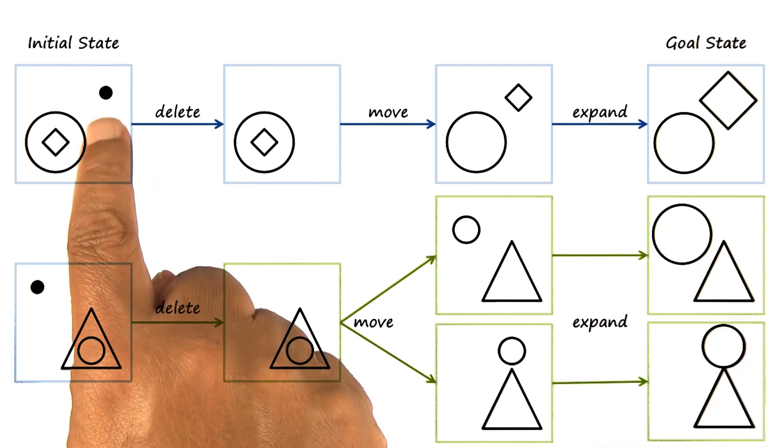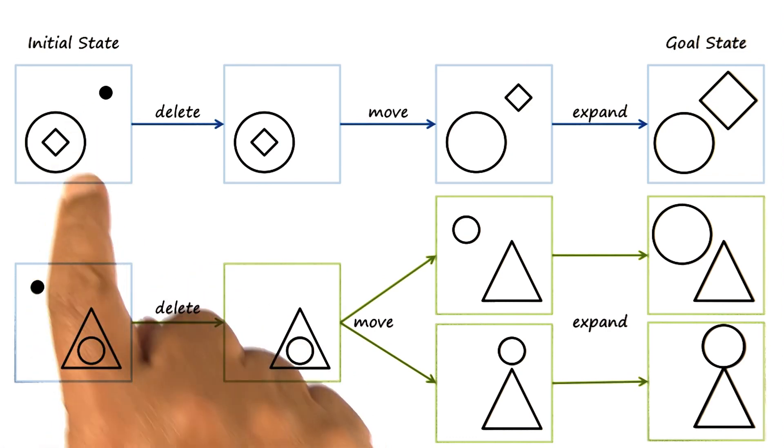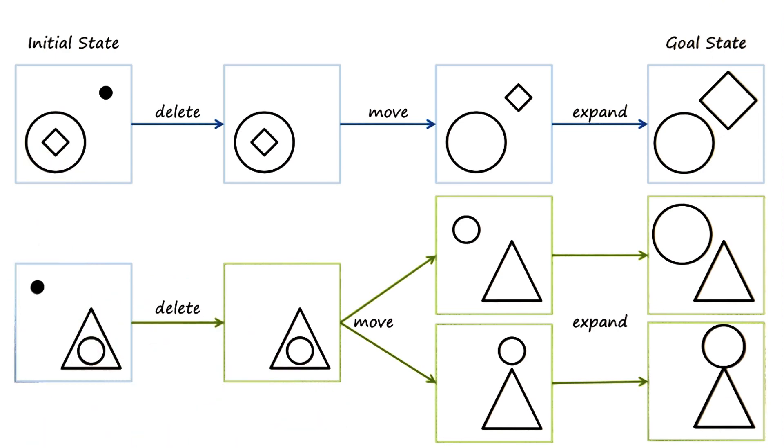the question here is what in the image A corresponds to what in image C? How do we know that the diamond inside here corresponds to the circle inside the triangle here? We'll discuss this in detail when we discuss analogical reasoning. But for now,